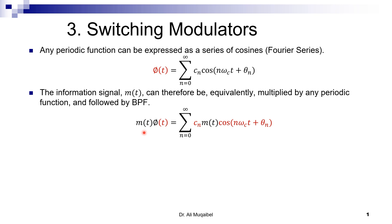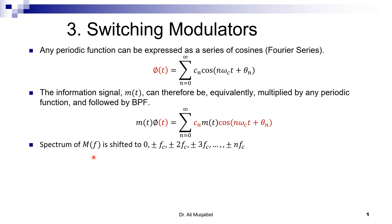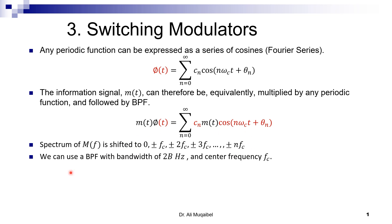Instead of multiplying the signal by a cosine, we multiply by anything that is periodic. That periodic signal is equivalent to its Fourier series. Using a low-pass filter we can pick one of these cosines. The spectrum of M(f) is now shifted to all different frequencies, and with a band-pass filter of double the bandwidth we can recover the signal of interest.